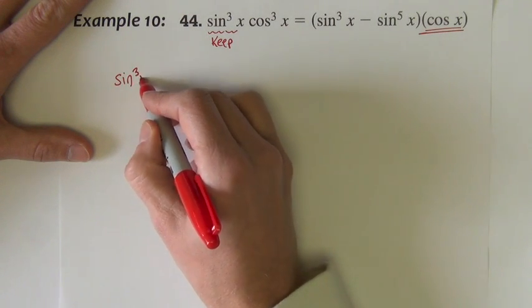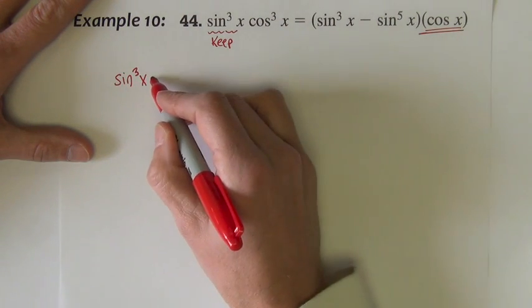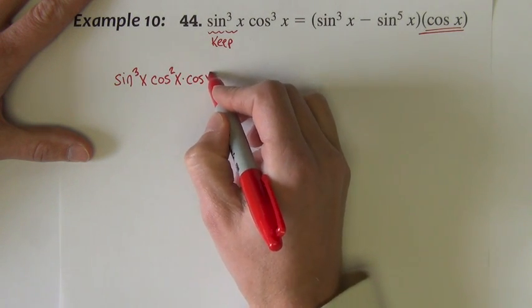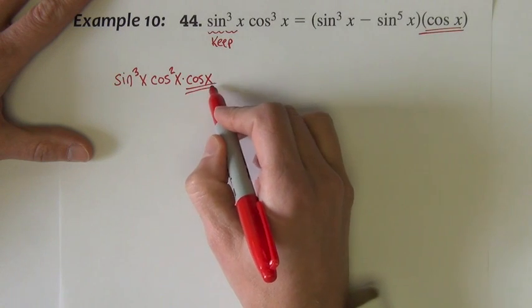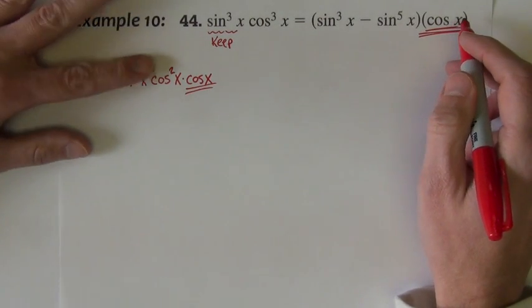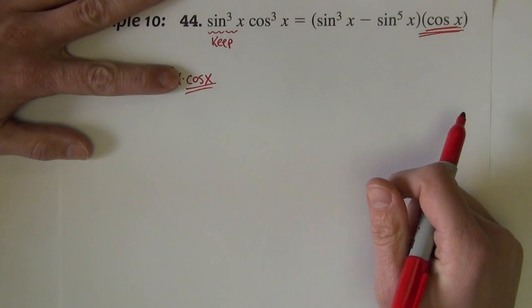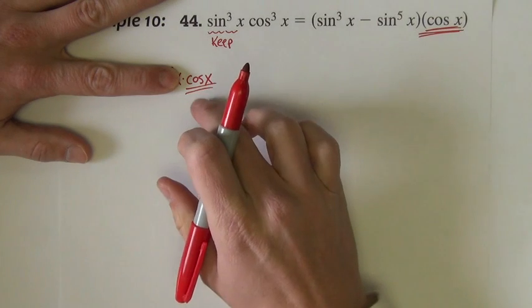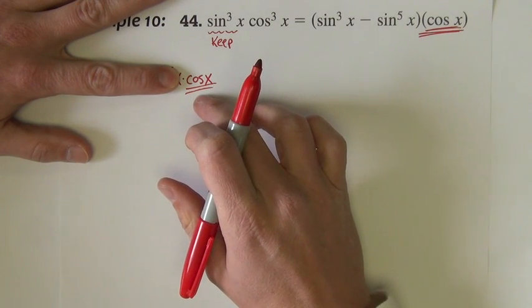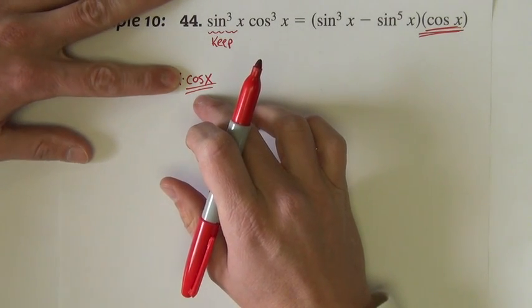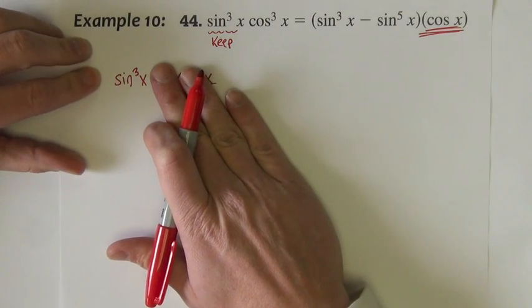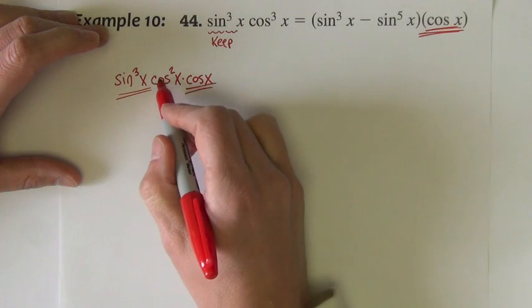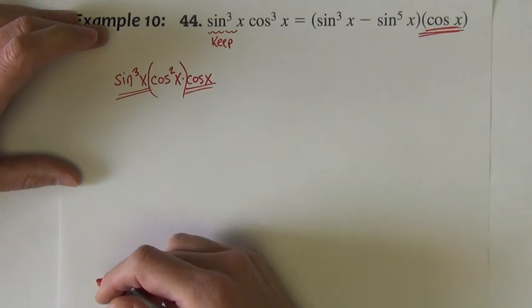I keep the sine cubed. And the cosine cubed, I'm going to rewrite it as cosine squared times cosine. So now this cosine here is this cosine. So I've got some of my answer matching up. I'm just going to save this now. I'm not going to do anything with it at this point in time. And I don't want to do anything with the sine cubed yet because I've got a lot of sines over here. So I'm going to keep the sine cubed right now. What I'm going to do is replace the cosine squared.